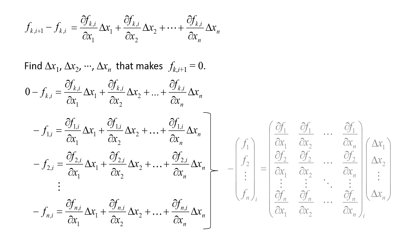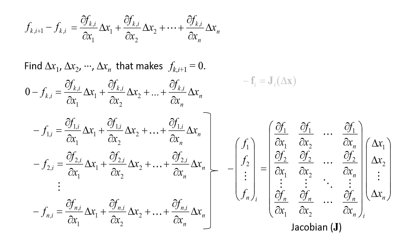We can rewrite the n equations into matrix form. The n by n matrix of partial derivatives is called the Jacobian and is represented by capital J. We can write the system of linear equations even more compactly as negative fi equals Ji times delta x, where fi is a column vector containing the n functions evaluated at step i, Ji is the Jacobian evaluated at step i, and delta x is a column vector containing the unknown step sizes.